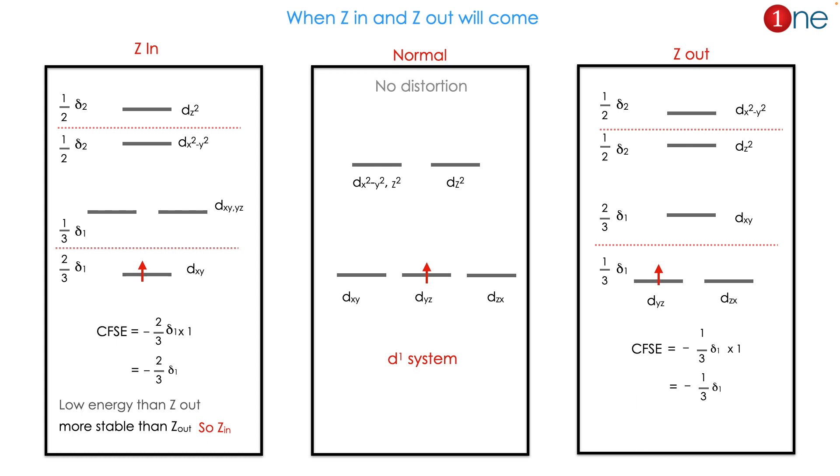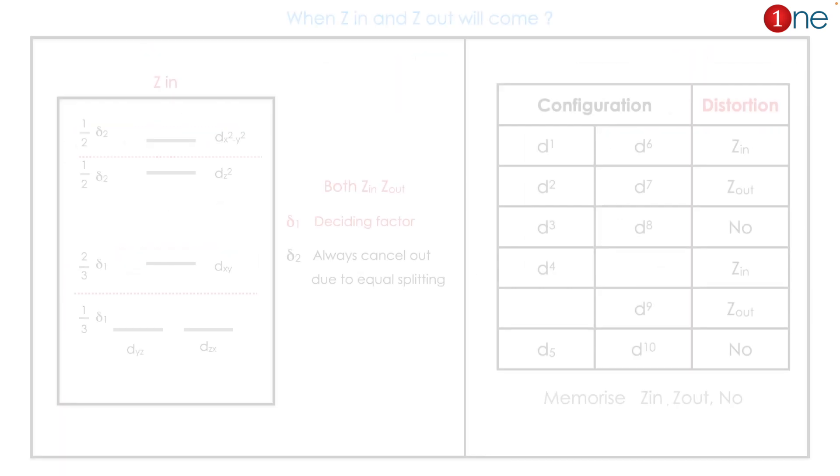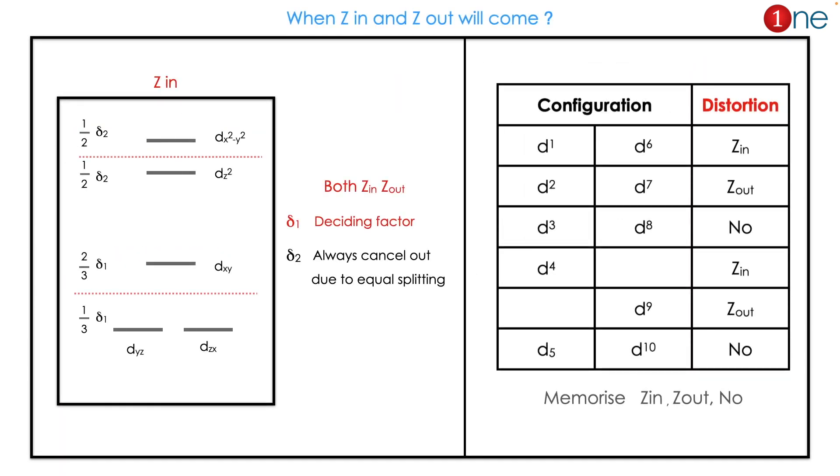Finding Z_in or Z_out will be very easy. You have to only focus on Δ1 because delta is splitting equally and most of the time won't influence. Only Δ1 is influencing, so you can find it easily. Moreover, finding the distortion is easy.